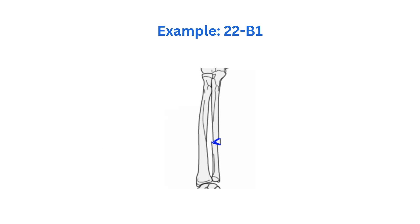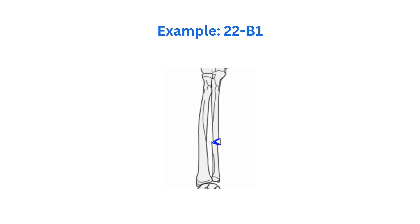22B1. 22 means radius and ulna. B means a wedge fracture, one means it's a spiral wedge. This typically represents a spiral fracture of the forearm bones with one intermediate fragment. Thanks for watching.